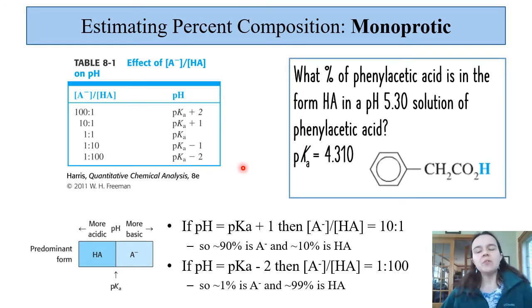So let's test this out. What would be the percent of phenylacetic acid in the form of HA, our neutral form, in a pH 5.3 solution? On the last slide, we determined that at pH 5.3, we are at the more basic end of things. This pH is essentially one pH unit higher, and so we have an approximate 10:1. Therefore, if we're concerning ourselves with HA, HA is going to be the part of one part out of 10, and therefore we have about 10% HA.